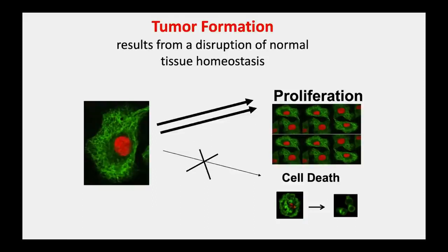The important take-home point is that cancer development represents a progressive destruction—you lose those safeguards—and you then have properties that allow the cell to survive, divide, move to distant sites through metastasis, and do all the things they shouldn't be doing.